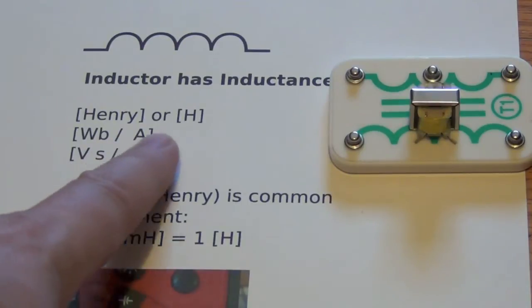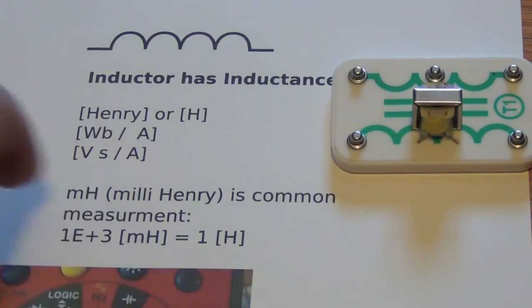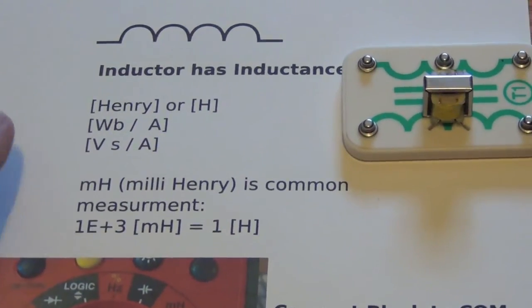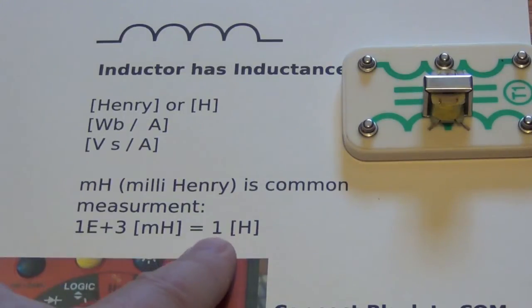Inductance is measured in Henrys. It's a Weber per amp or a volt second per amp. And oftentimes in our lab, we're going to be measuring millihenrys. And there's 1000 millihenrys for every Henry.